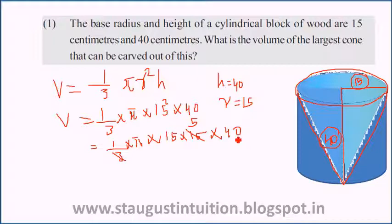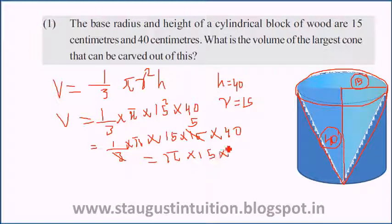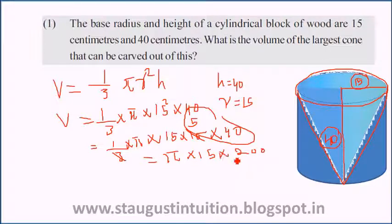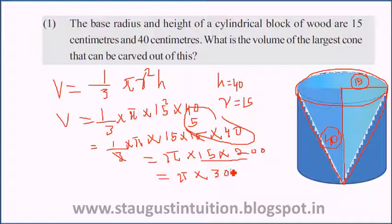Then, 5 into 40 equals 200. This is equal to π into 15 into 5 into 40, which gives 200. So this simplifies to π into 30, which equals 3,000 π.